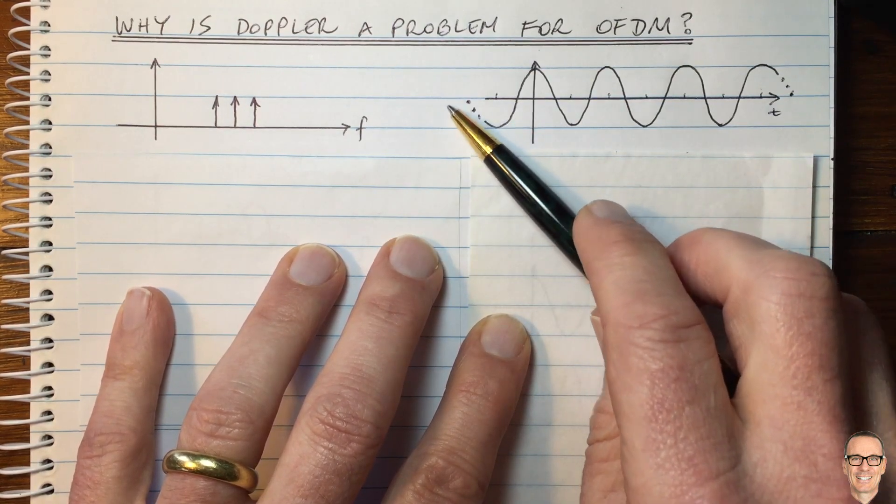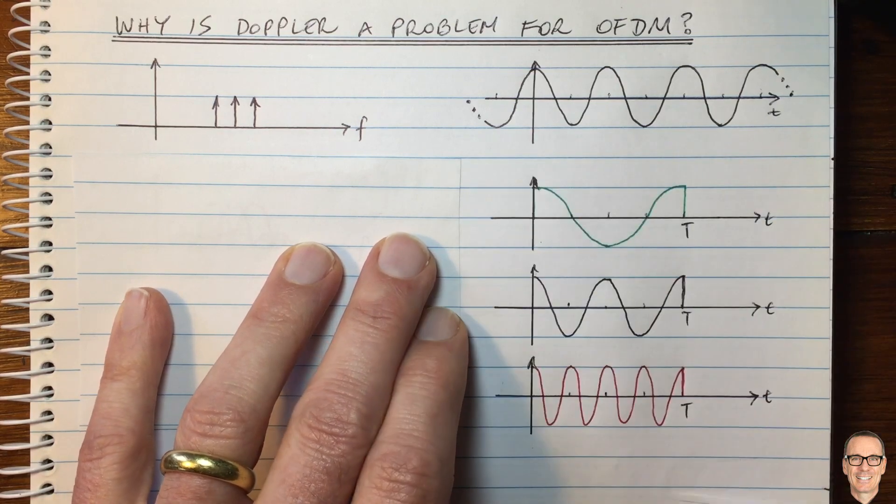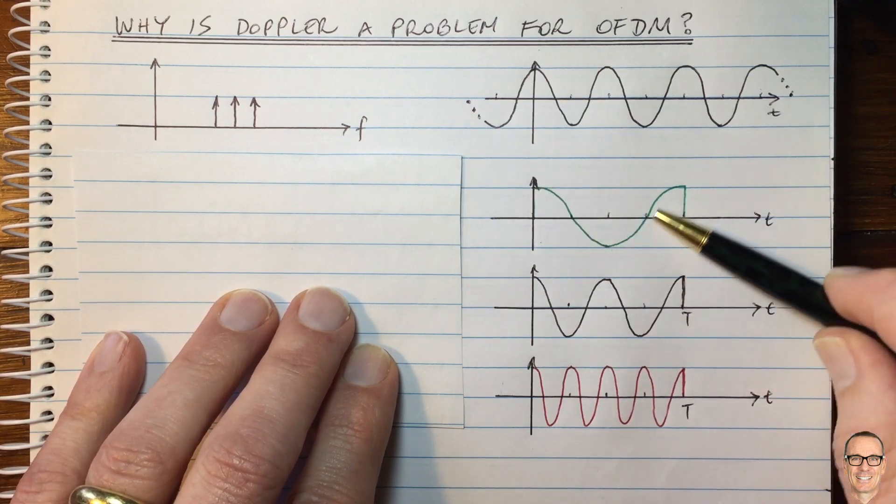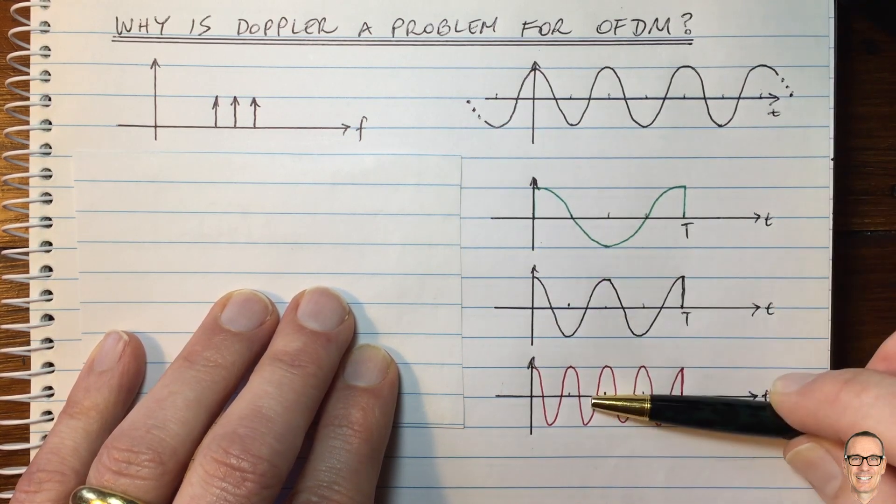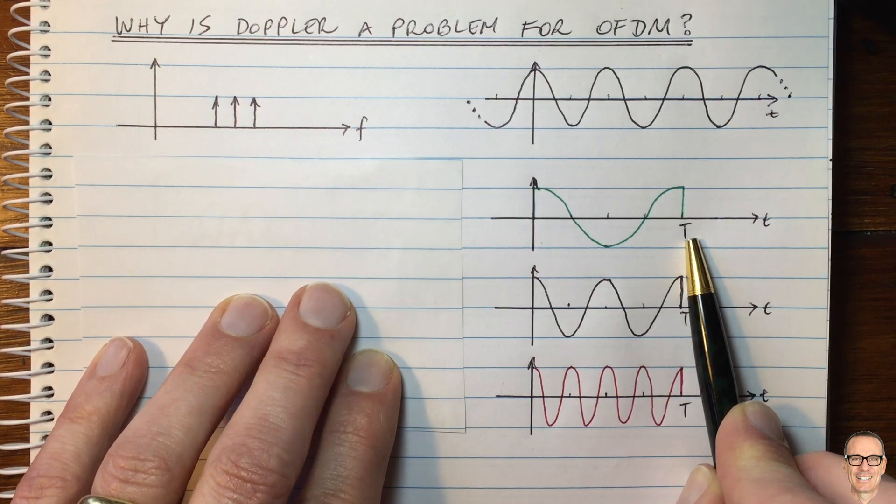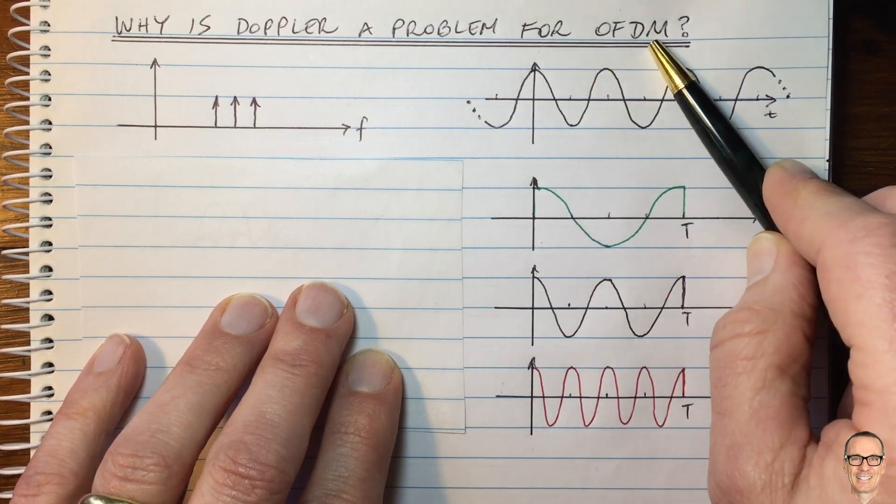Now, of course, we don't send signals for an infinite amount of time. We send signals for a finite amount of time. So, for example, let's say we had three signals on different carriers, and we're going to send them for an amount of time, capital T, and this is what we do in digital communications. In fact, this is what we do in OFDM.